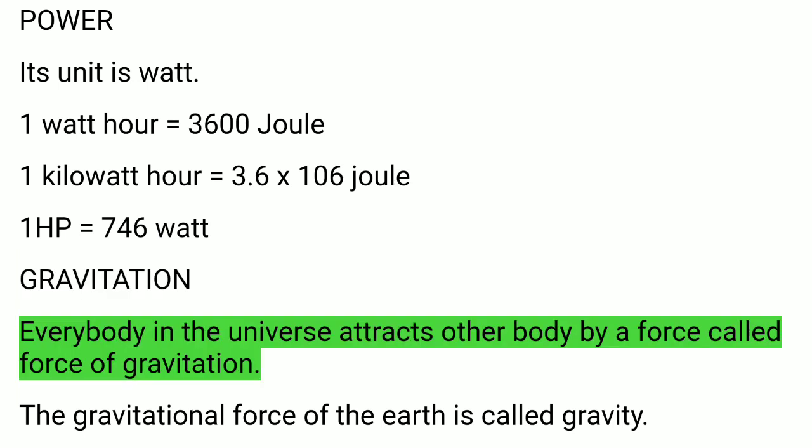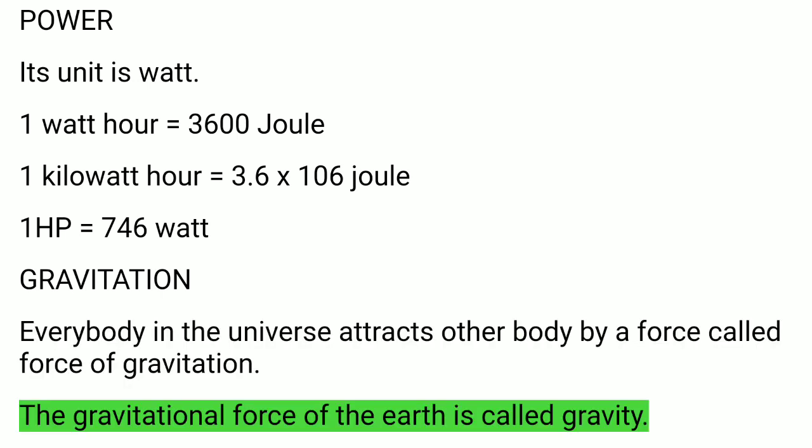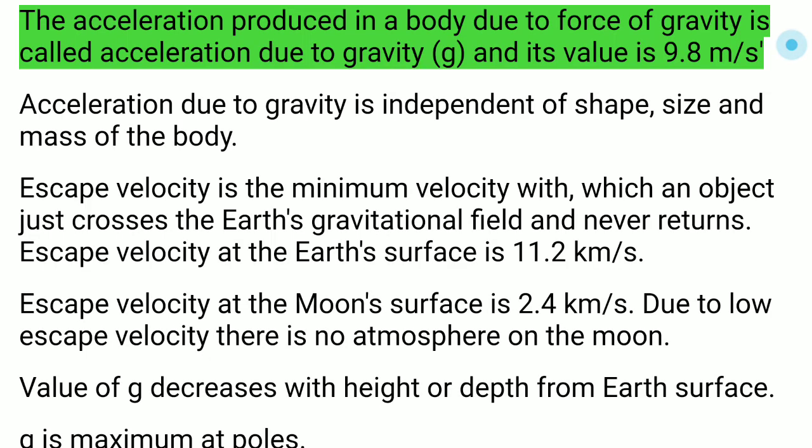Gravitation: Every body in the universe attracts every other body by a force called the force of gravitation. The gravitational force of the Earth is called gravity. The acceleration produced in a body due to the force of gravity is called acceleration due to gravity, g, and its value is 9.8 meters per second squared.